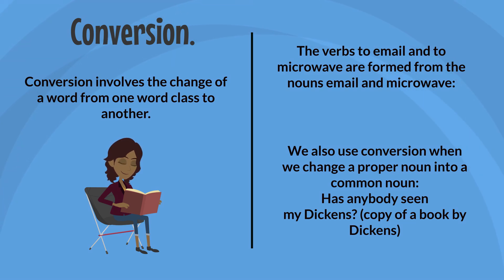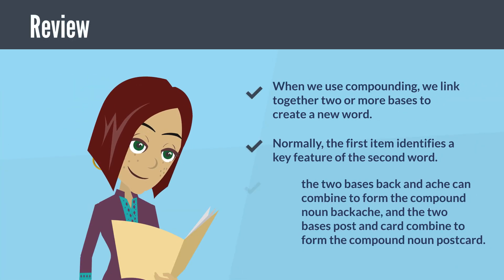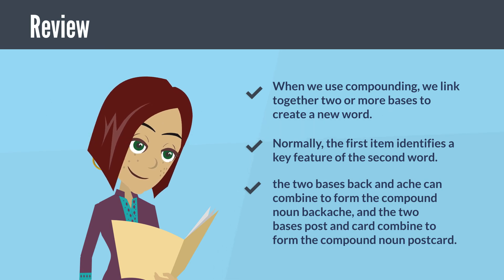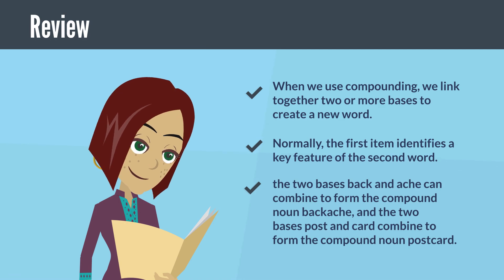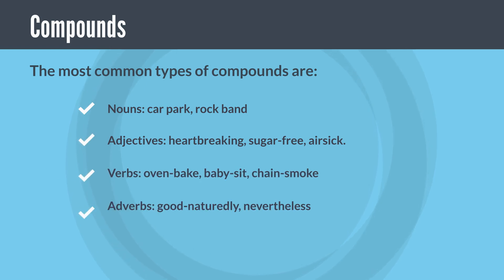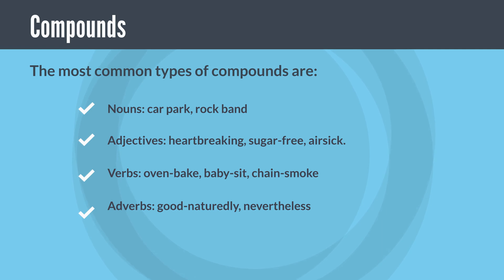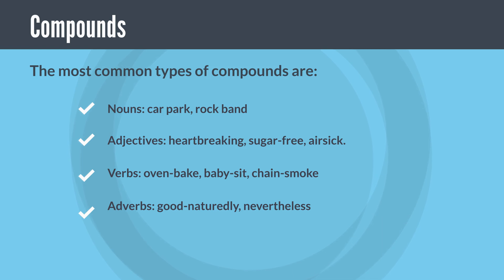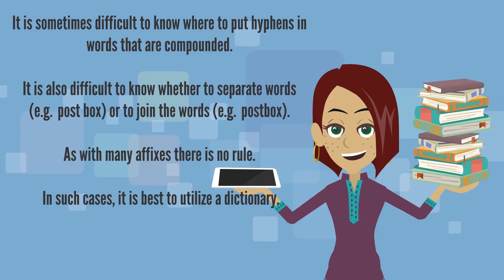In review: when we use compounding, we link together two or more bases to create a new word. The first item normally identifies a key feature of the second word — for example, 'back' + 'ache' = 'backache'; 'post' + 'card' = 'postcard.' Compounds are found in all word classes: nouns (car park, rock band), adjectives (heartbreaking, sugar-free, airsick), verbs (oven-bake, babysit, chain-smoke), and adverbs (good-naturedly, nevertheless). It can sometimes be difficult to know where to put hyphens or whether to separate or join words — as with many affixes, there is no rule, so it is best to consult a dictionary.